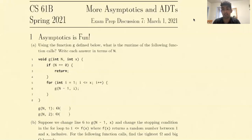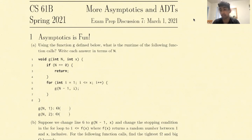Hi everyone. This is going to be a video walkthrough on problem 1 on CS61B Spring 2021 Exam Prep Discussion No. 7 on asymptotics and ADTs. This asymptotics problem is on the challenging side, and it covers asymptotics with multiple recursive calls. If you're not familiar with where to start for these problems, I recommend watching the first mini-lecture in this series, which covers how to approach these types of tree asymptotic problems.